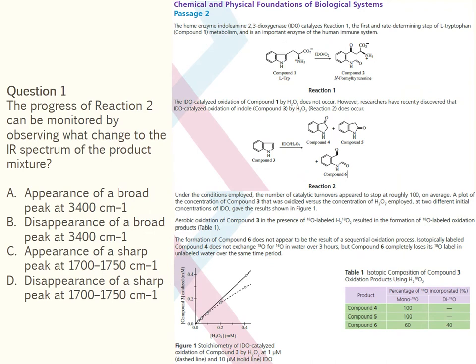The question related to this example reads: 'The progress of Reaction 2 can be monitored by observing what changed in the IR spectrum of the product mixture.' The correct answer is C. This question requires the test taker to combine knowledge about infrared spectroscopy with reasoning about the structural differences between the products of Reaction 2. The test taker must work with the scientific model of IR absorbances of various functional groups and apply this model to the experiment described in the passage — specifically, recognition of additional carbonyl groups should lead to identifying a peak between 1700 and 1750 cm⁻¹ as the most effective monitor of product formation.